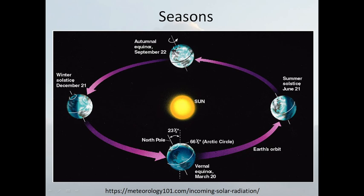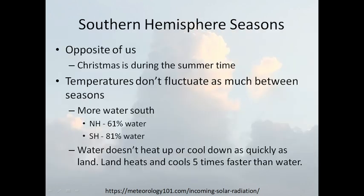Temperatures don't fluctuate as much between seasons in the southern hemisphere. The northern hemisphere is 61% water; the southern hemisphere is 81% water. Water doesn't heat up or cool down as quickly as land — land heats and cools five times faster than water. This drives sea breezes: the land heats up, colder air over the oceans comes rushing in, creating a sea breeze. At night, the land cools down, creating a higher pressure cold air mass that pushes out and causes a land breeze in the opposite direction.